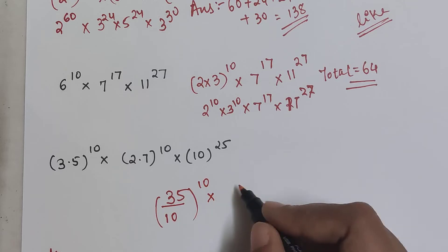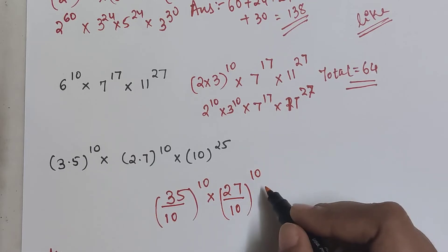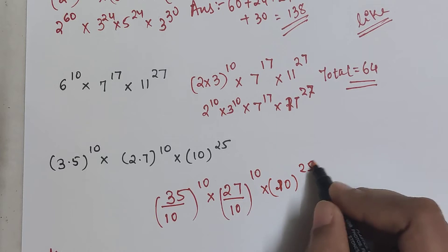This can be written as 3.5 upon 10 the whole raised to 10 into 2.7 upon 10 the whole raised to 10 into 10 the whole raised to 25.